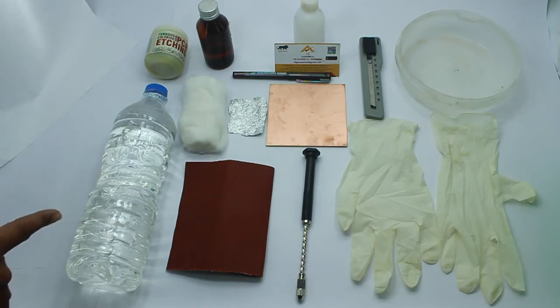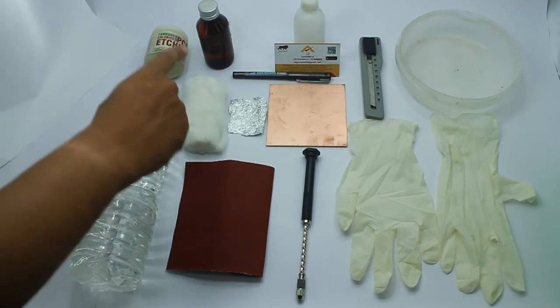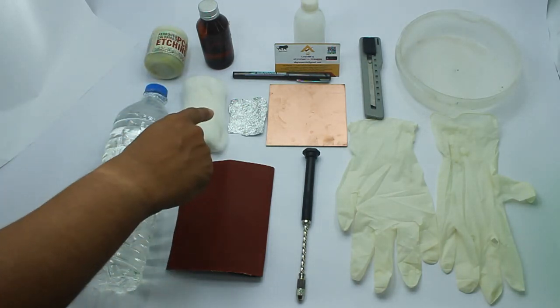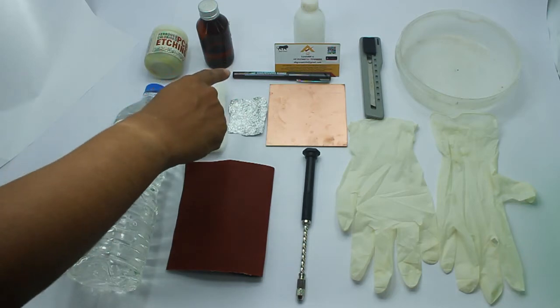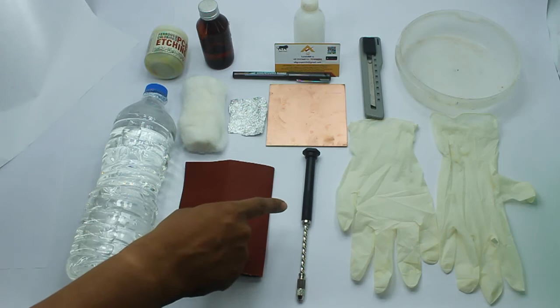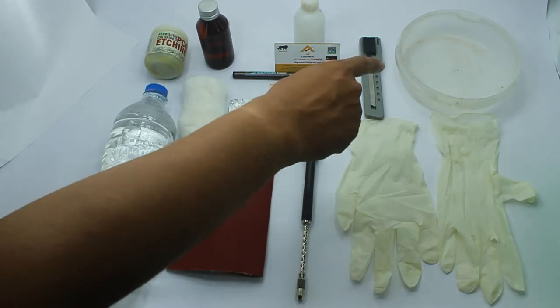1 liter of water, ferric chloride (FeCl3), spirit, cotton, sandpaper, aluminum foil, permanent marker, acetone, copper clad, hand drill, gloves, cutter, and bowl to etch.